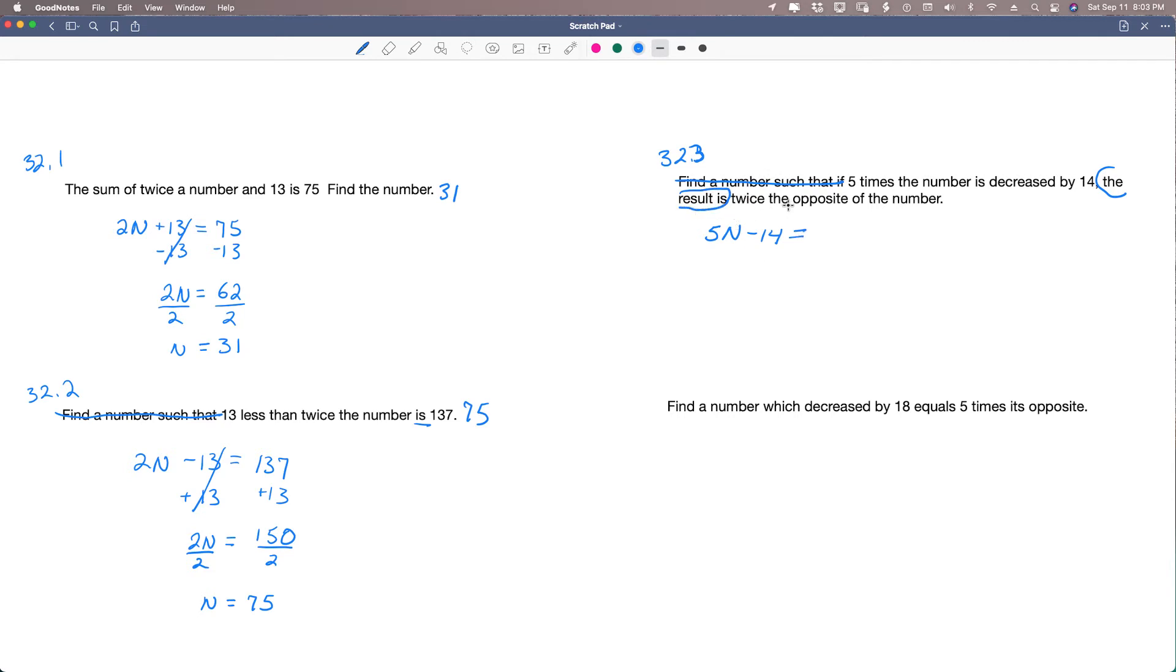Twice the opposite of the number. So twice the opposite of the number. It's like saying 2 times negative n, so negative 2n. Twice the opposite of the number. That's all together there.